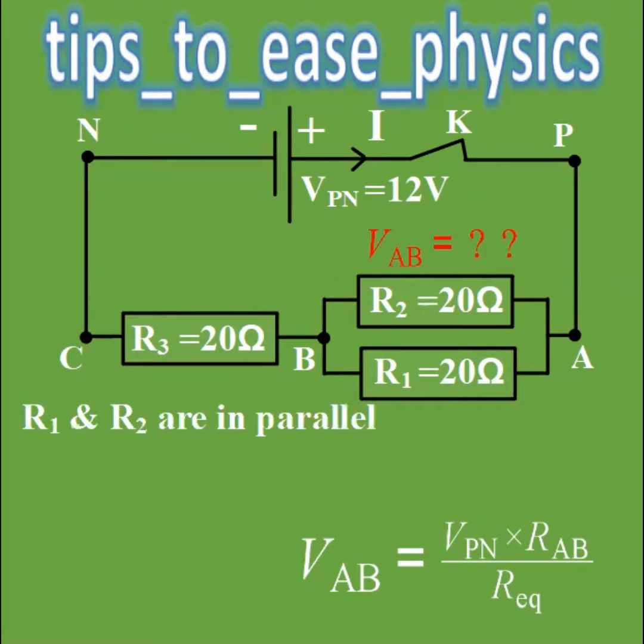So R1 and R2 are connected in parallel so 1 over R12 equal 1 over R1 plus 1 over R2 which will give us 1 over 20 plus 1 over 20 and it is 2 over 20. Now we will flip them. R12 is equal to 20 over 2 equals 10 ohms.